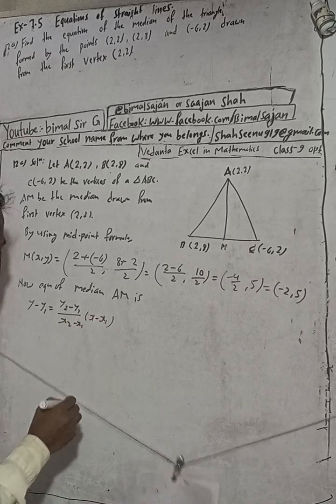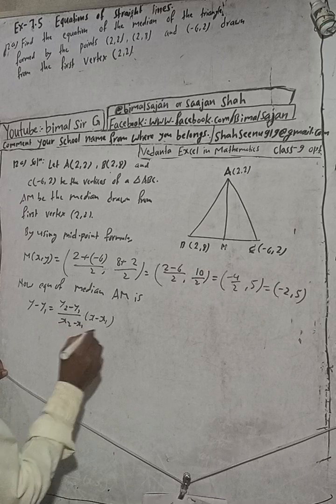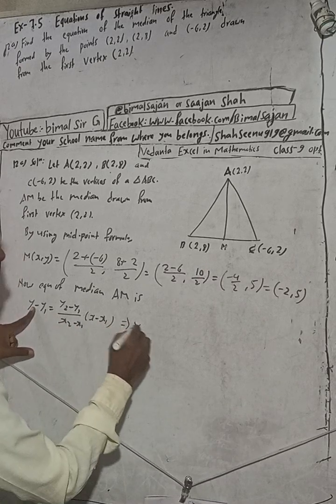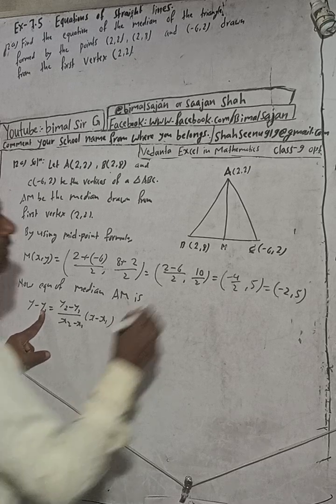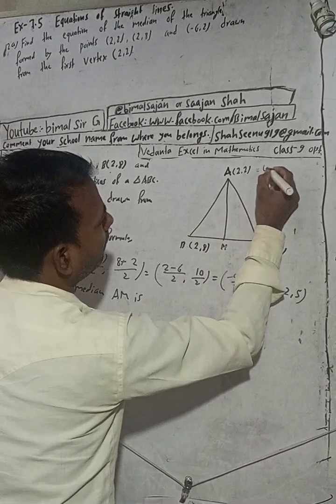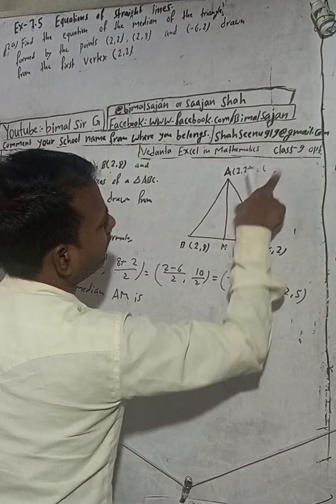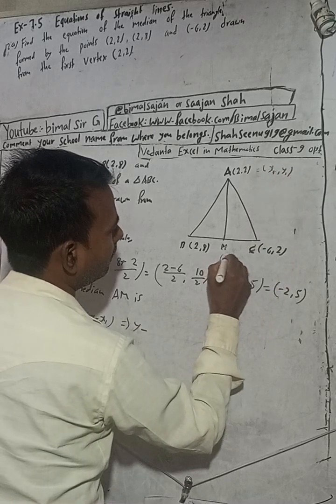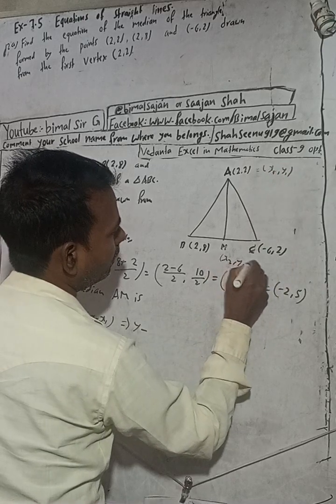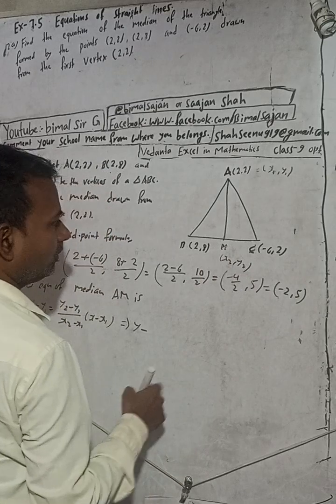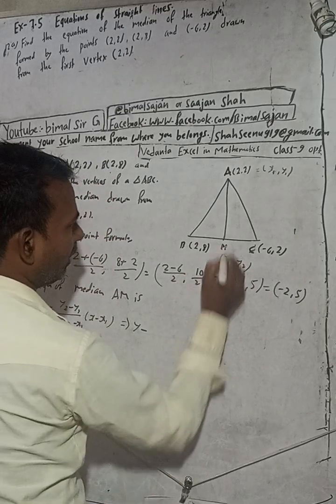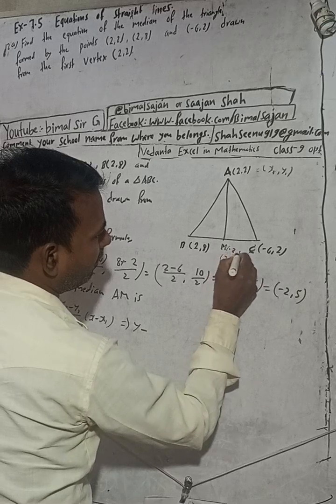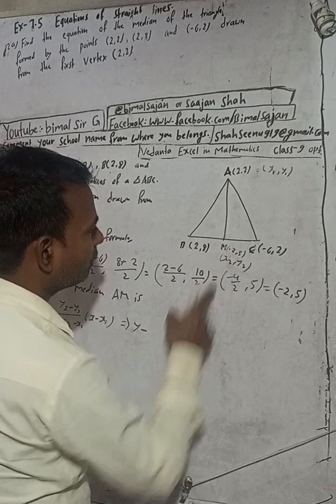Now, what we have to do? Suppose this is our x1,y1 and this is our x2,y2. So, y1 we have got 2, and x1 is 2. This is our point. Now, y minus y1 where y1 is 2.